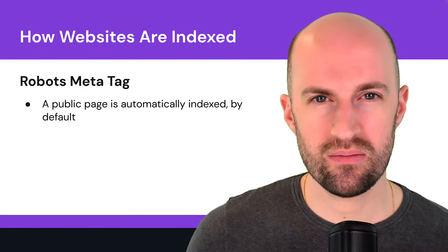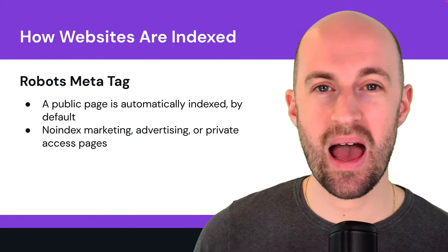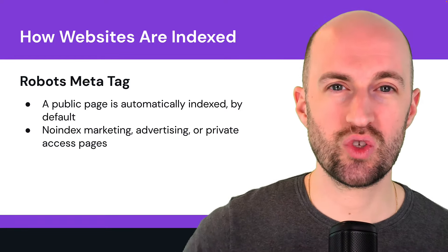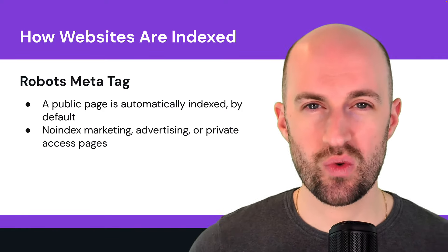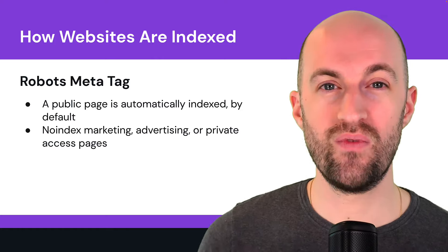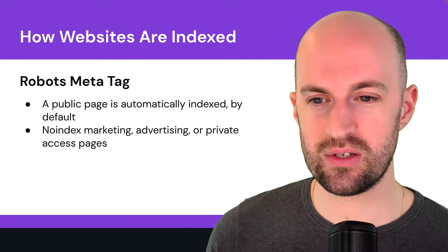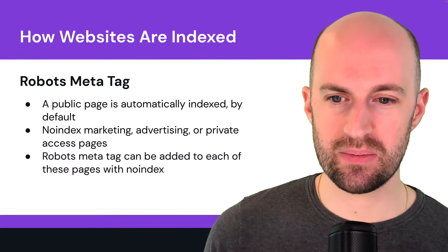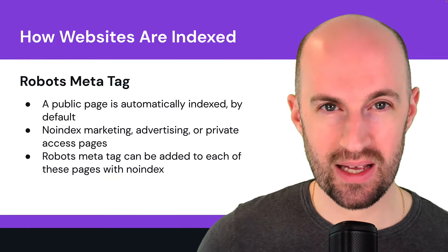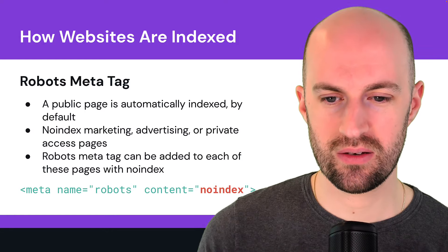The robots meta tag: by default, a public page is automatically indexed if not defined otherwise. With the robots meta tag you can add a 'noindex' attribute to tell Google you don't want that page in search results. This is especially useful for marketing pages, advertising pages, or private access pages you don't want publicly visible in search engines. The robots meta tag is added to the head section of the HTML with the noindex tag.